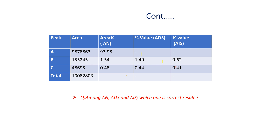From the results, it is clear that for impurity C, results obtained by all three methods are similar. But for impurity B, the result obtained by the area normalization method and by using the diluted sample are similar, but the result obtained using the impurity standard is different. The question is: among AN, ADS, and AIS methods, which one gives the correct result?